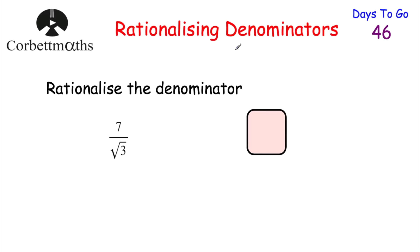Today we're going to be looking at rationalizing denominators. Whenever you've got a fraction with a surd on the denominator, we want to rationalize it — we don't like having irrational numbers on the denominator. So if we had something such as 7 over root 3, we don't want this root 3 on the bottom line because it's irrational. What we do is multiply both the numerator and denominator by the same thing to get a rational number on the denominator.